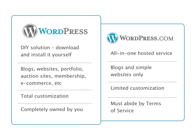The WordPress.org version is a do-it-yourself solution where you need to download and install WordPress on your own server. The WordPress.com version only requires you to sign up with an email address.